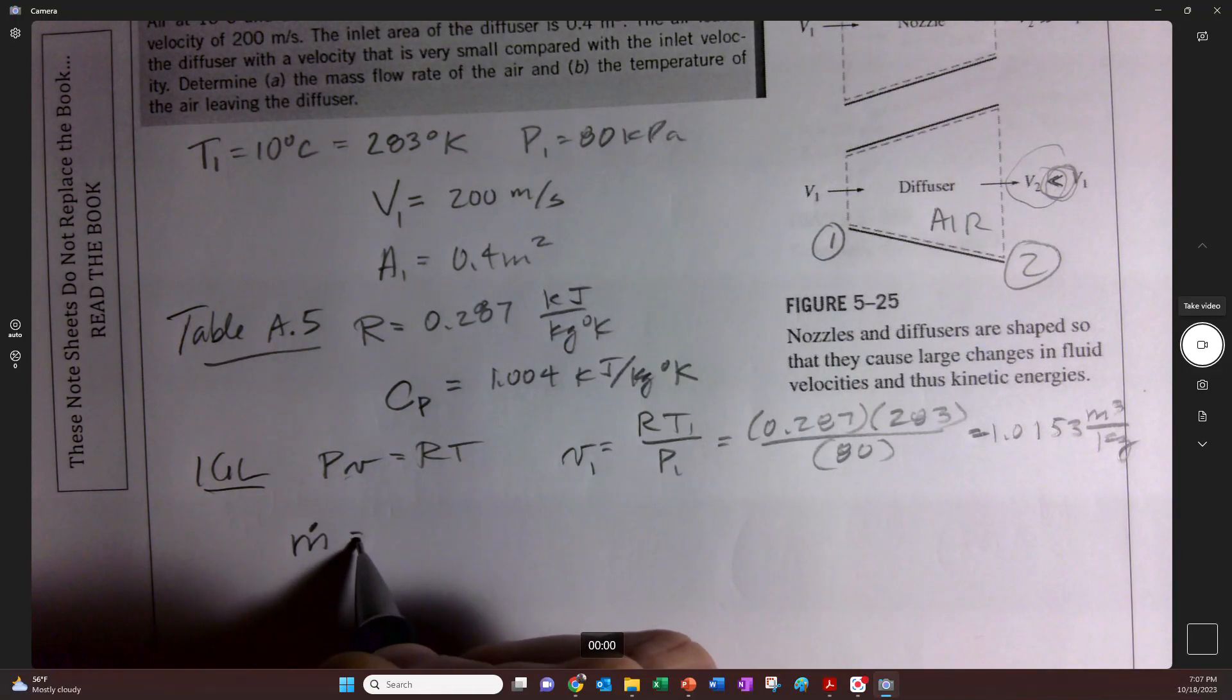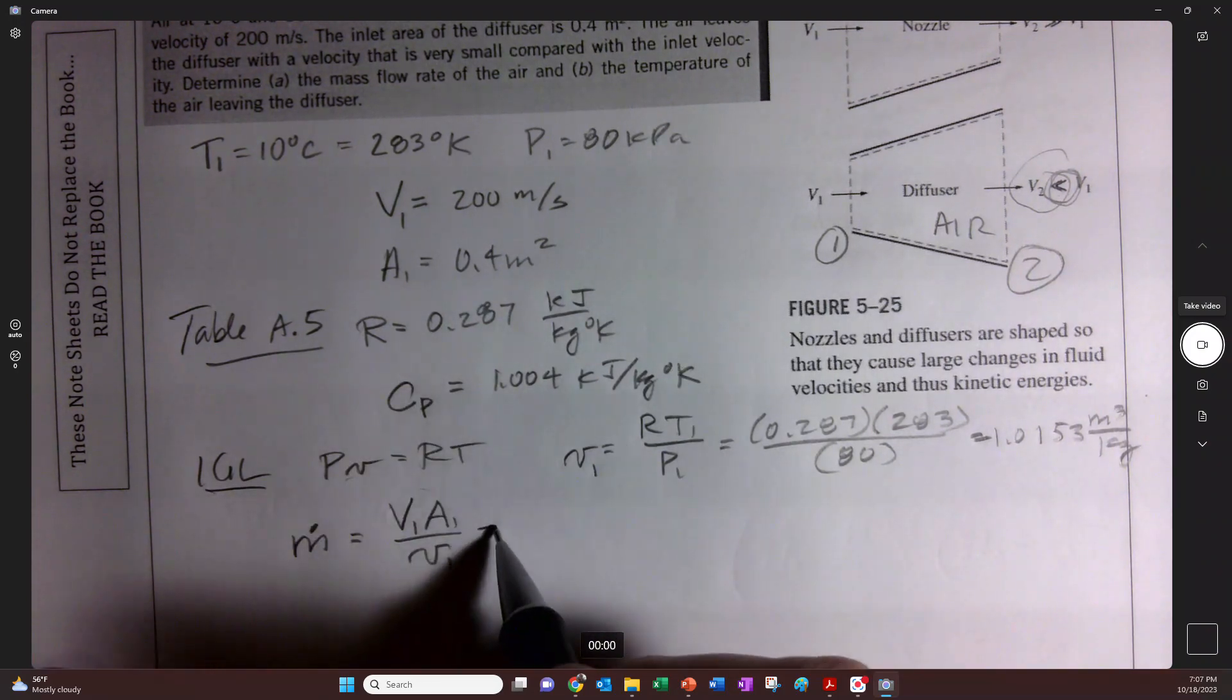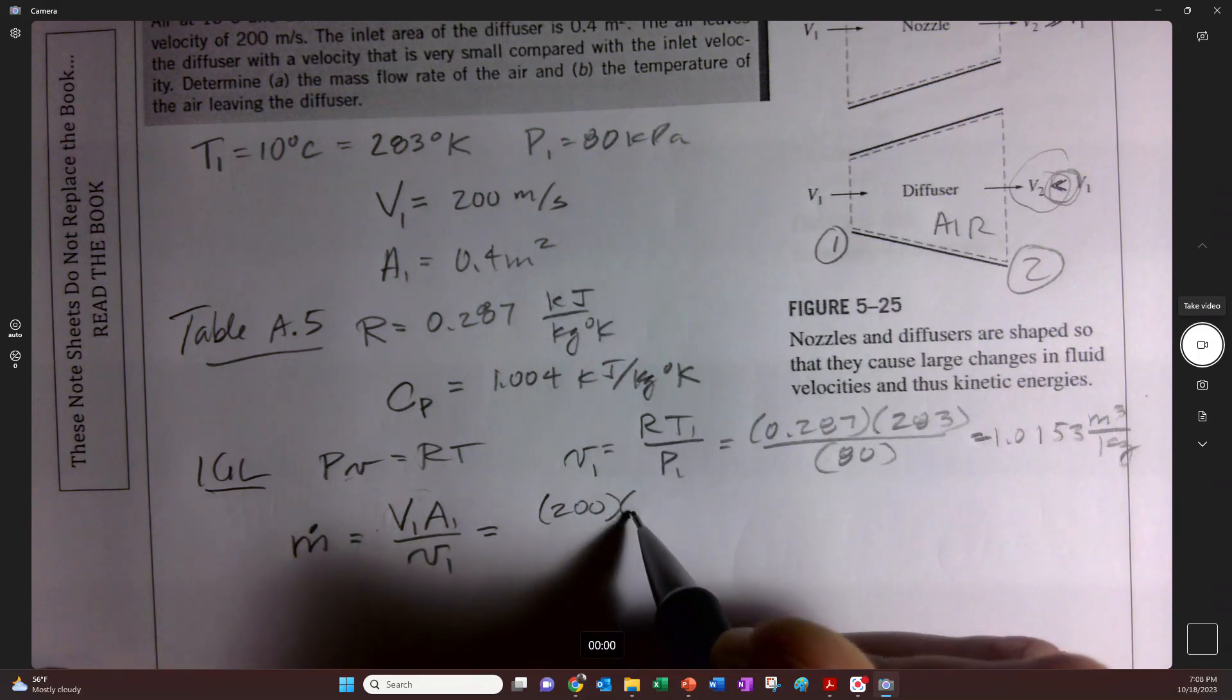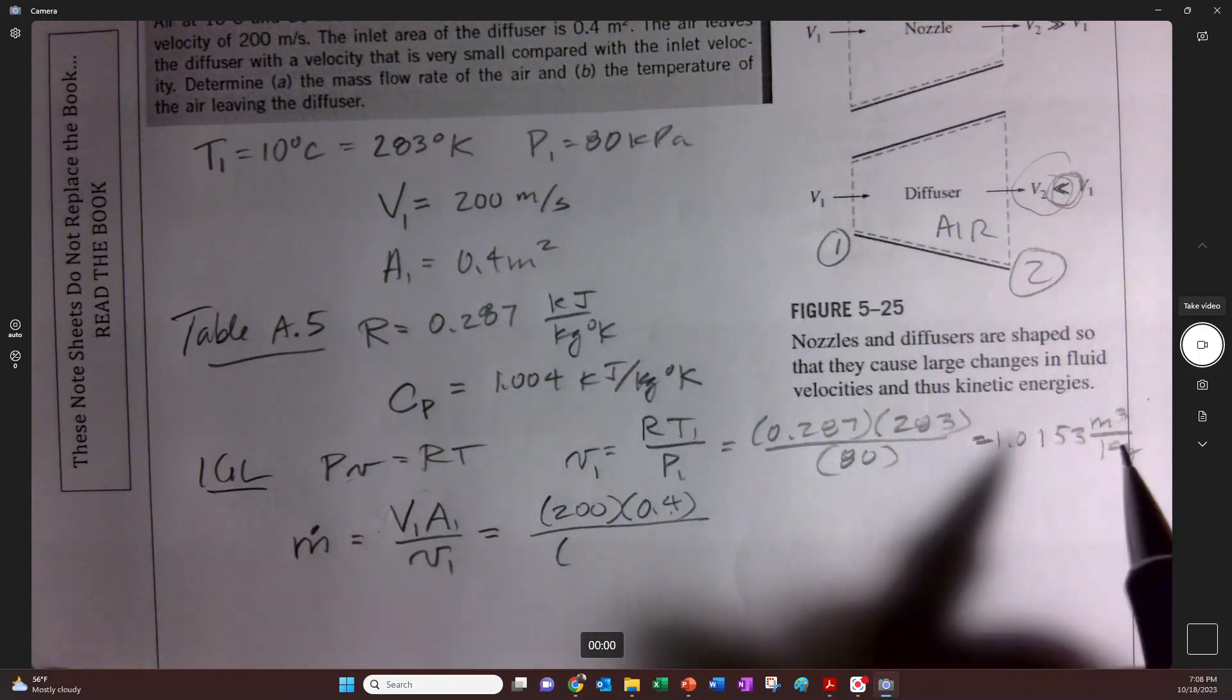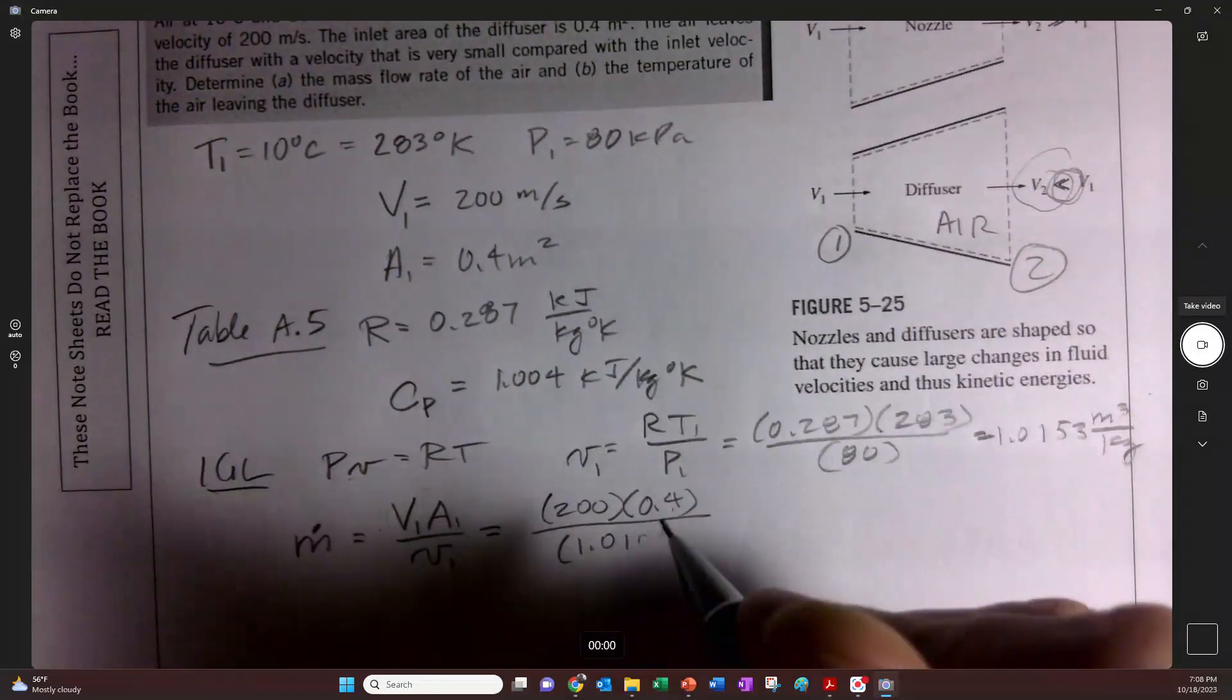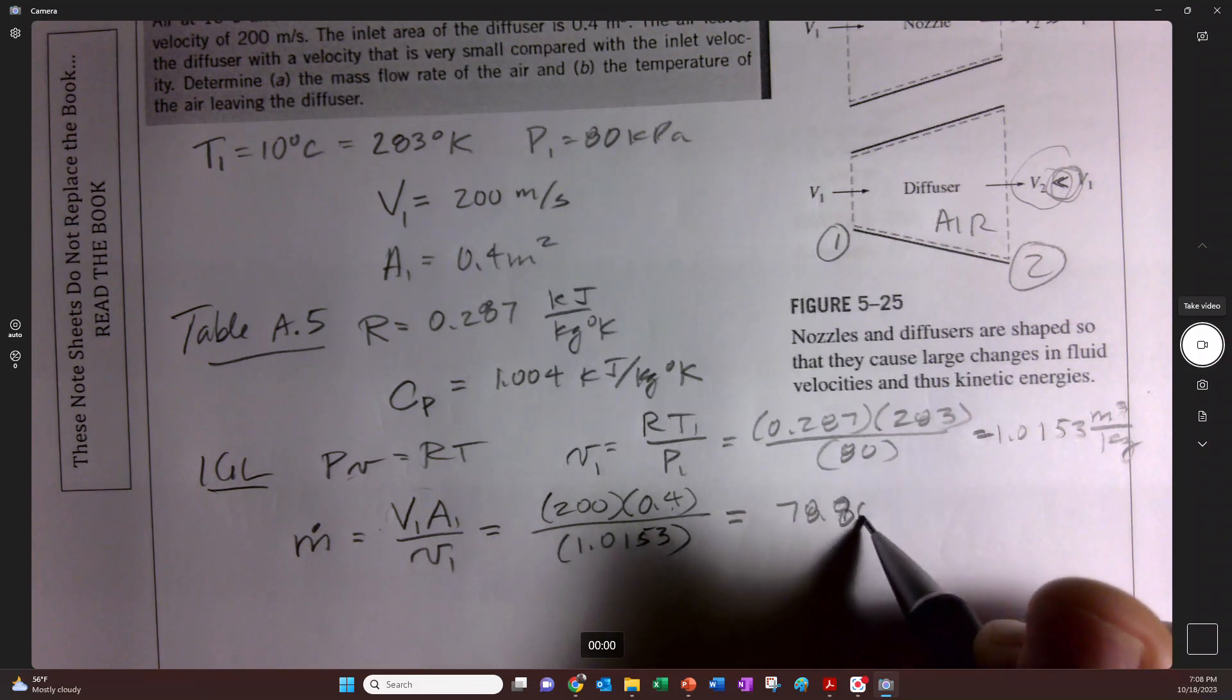So the mass flow rate can be found by having V1 A1 over v1. This rate, V1 A1, is the volumetric flow rate, and this is essentially the same thing as multiplying by density. So we're going to go 200 times 0.4, that's cubic meters per second, divided by cubic meters per kilogram, and we get 78.80 kilograms per second.